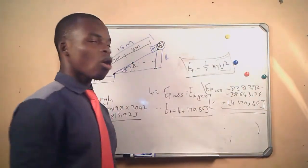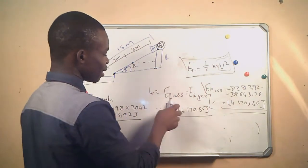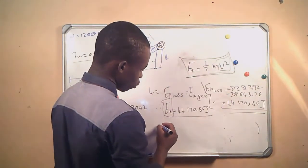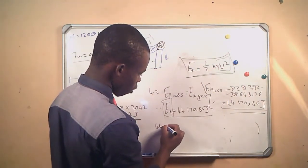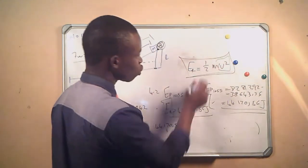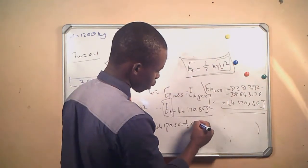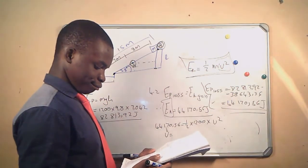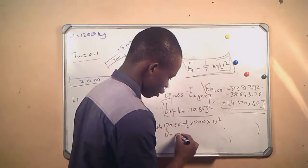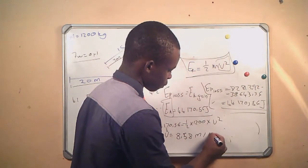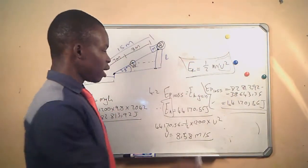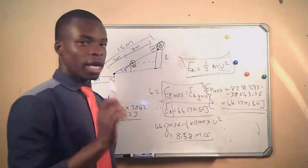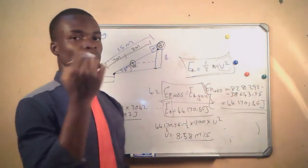We know the kinetic energy formula is EK equals half mv squared. This is the kinetic energy of the object when it is at point B. Substituting, we get 44,170.56 equals half times 1200 times v squared, and our velocity equals 8.58 meters per second. This is the application of conservation of energy — energy cannot be destroyed nor created, but it can only be transferred from one state to another, from potential energy to kinetic energy.